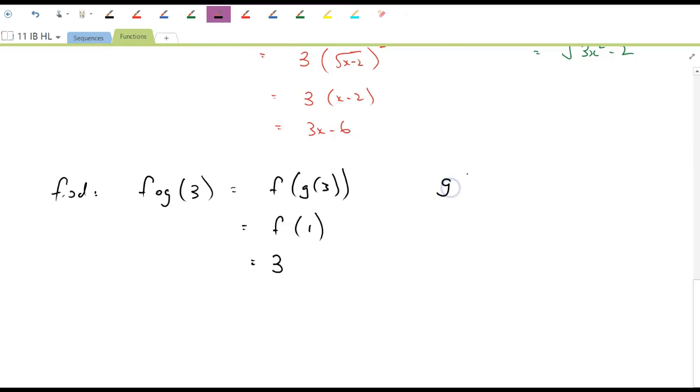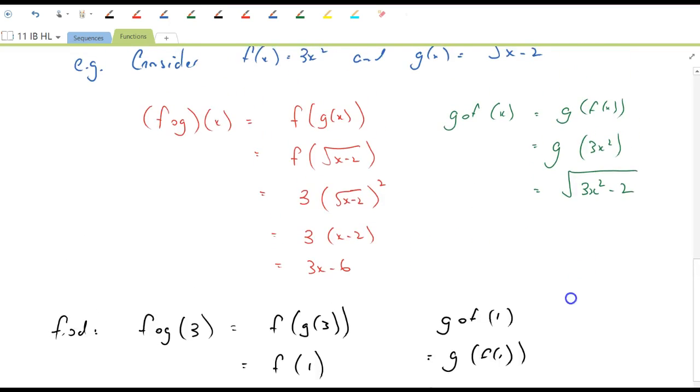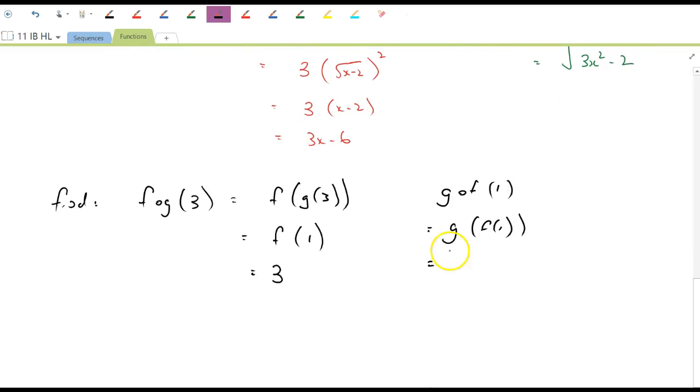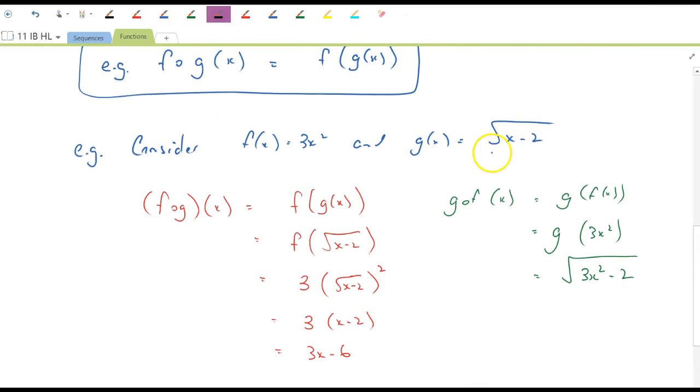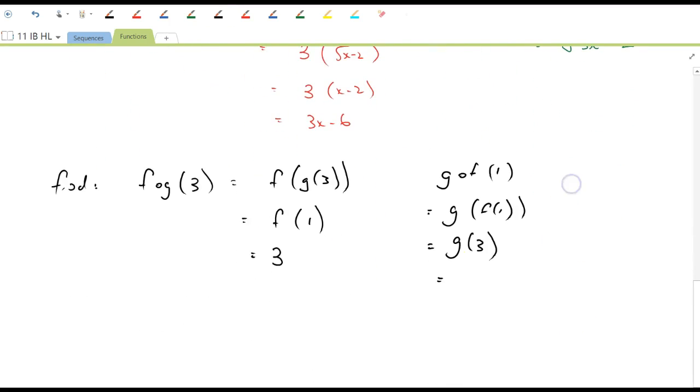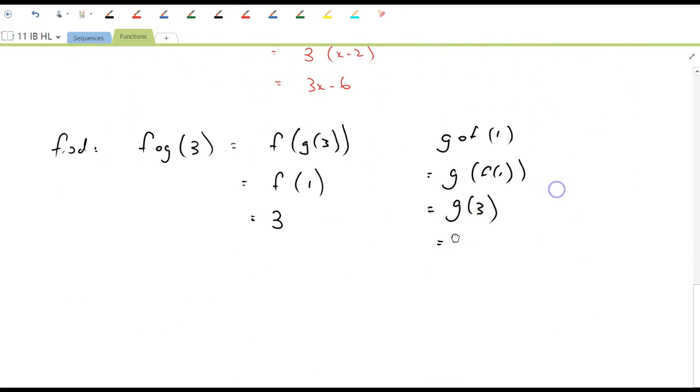So another example, finding g of f(1), so that's equal to the function value of 1 applied to the g function. So the function value of 1 is 3 times 1, which is 3. So we take 3 and put it into the g function, and we get 3 minus 2 is, so we get the square root of 1, which is 1.